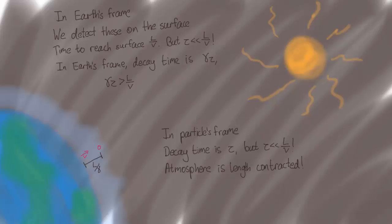So now the condition for the muon to reach the surface is for tau to be greater than L over gamma V, or gamma tau greater than L over V. So now we see that the condition for the muon to reach the surface is the same in the Earth's frame or the particle's frame.